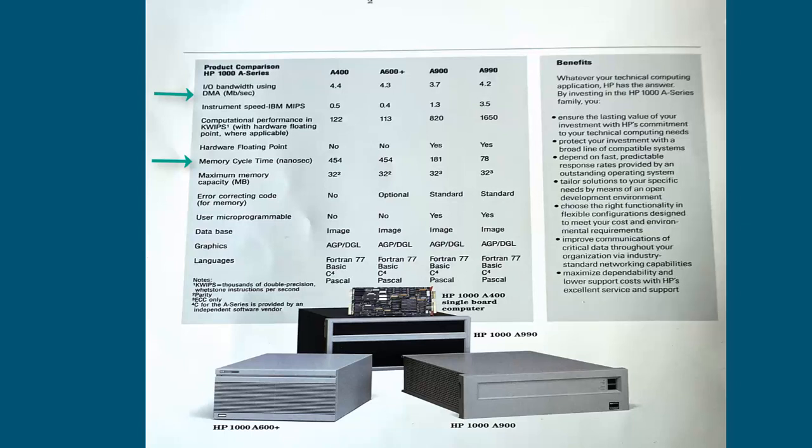Notice at the bottom — very important — the language compatibility line. The same program runs on the small, cheap A400 as on the powerful and expensive A990. You don't have to change the application code. You might have to relink your programs before executing, as the linker can automatically exchange the entry points — for example, floating point hardware is used on the A990 while the software equivalent is used on the A400.